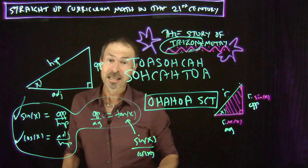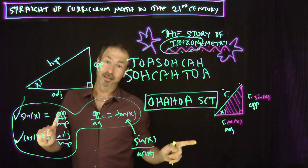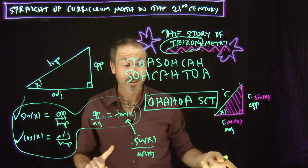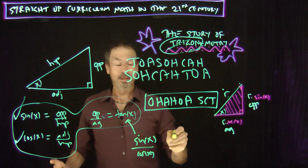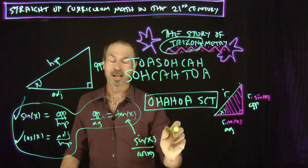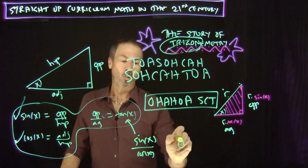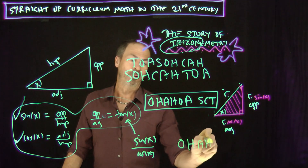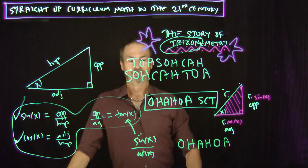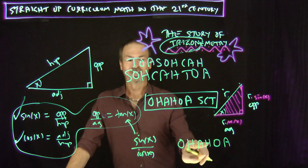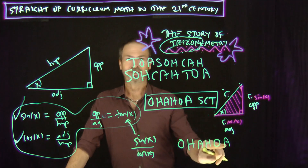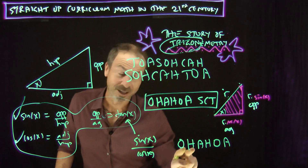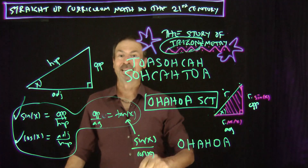In India, they call their actors and actresses heroes and heroines. Apparently this is popular in some parts of India: 'Once hero and heroine over acted.' O-H, A-H, O-A — sine, cosine, tangent.